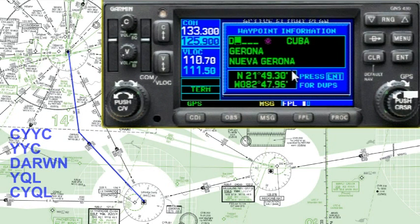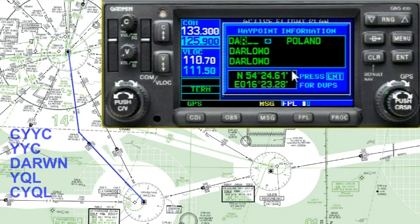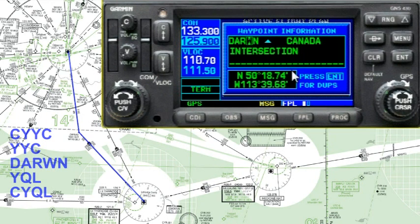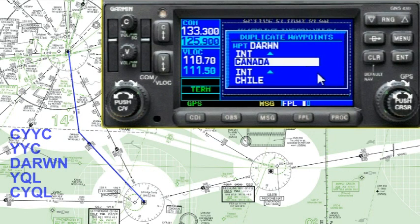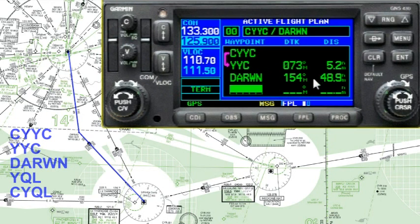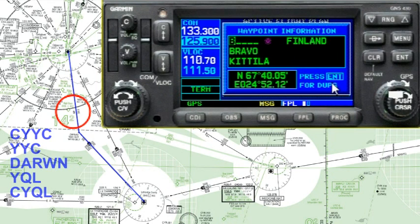Next we're going to put in Darwin. Notice the anticipation — I put the W in and the Garmin anticipates the rest. Hit the enter button. There's more than one Darwin in the world, but we want the one in Canada — accept that. It's very important to pause here and check that the bearing of 154 and distance of 48.9 matches your map. It's looking good. Now put in YQL.